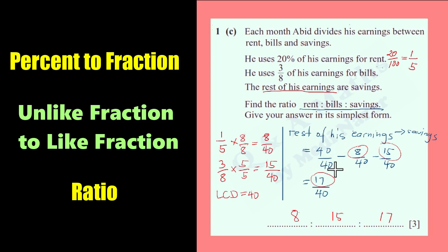Take note that this 40 over 40 is the whole earnings. This is the whole earnings that we divide into 3: this one for the rent, for the bills, and for the savings.